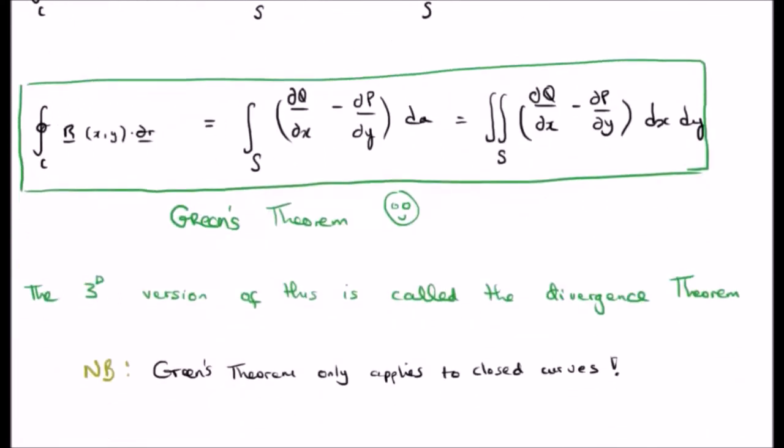It's the three dimensional version of what's called the divergence theorem. It's kind of like that and later on I will show the relationship between Green's theorem and the divergence theorem.